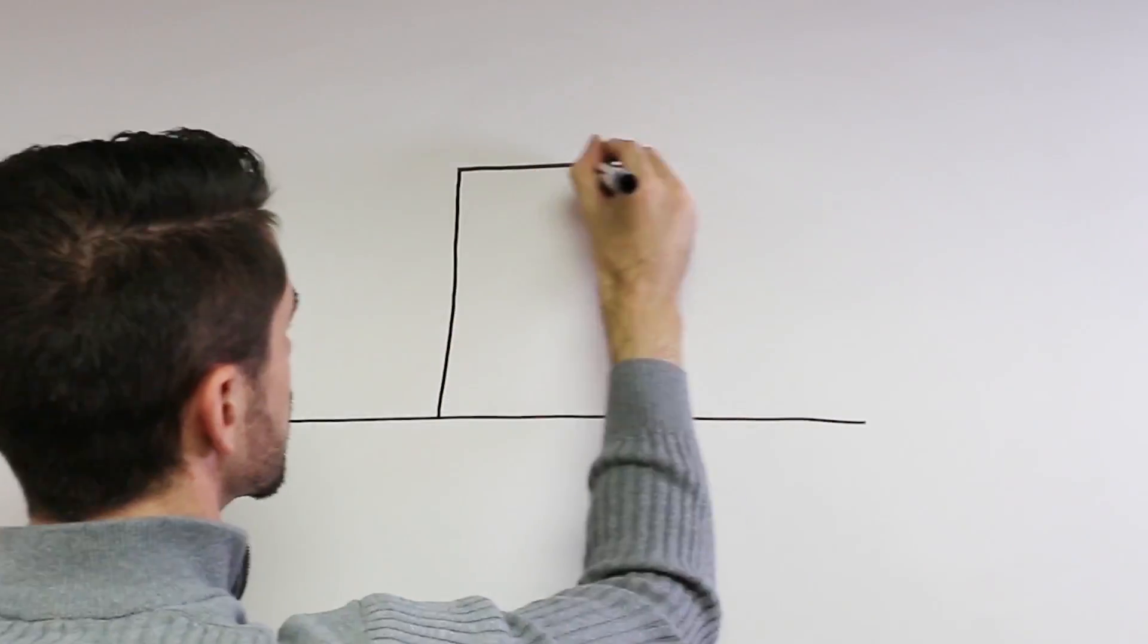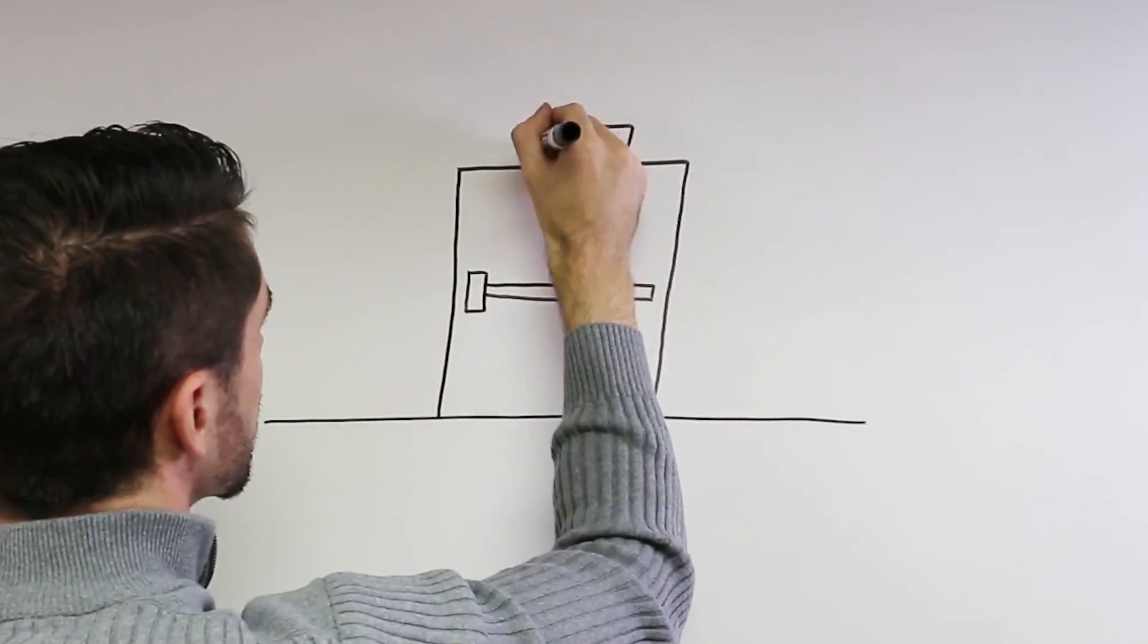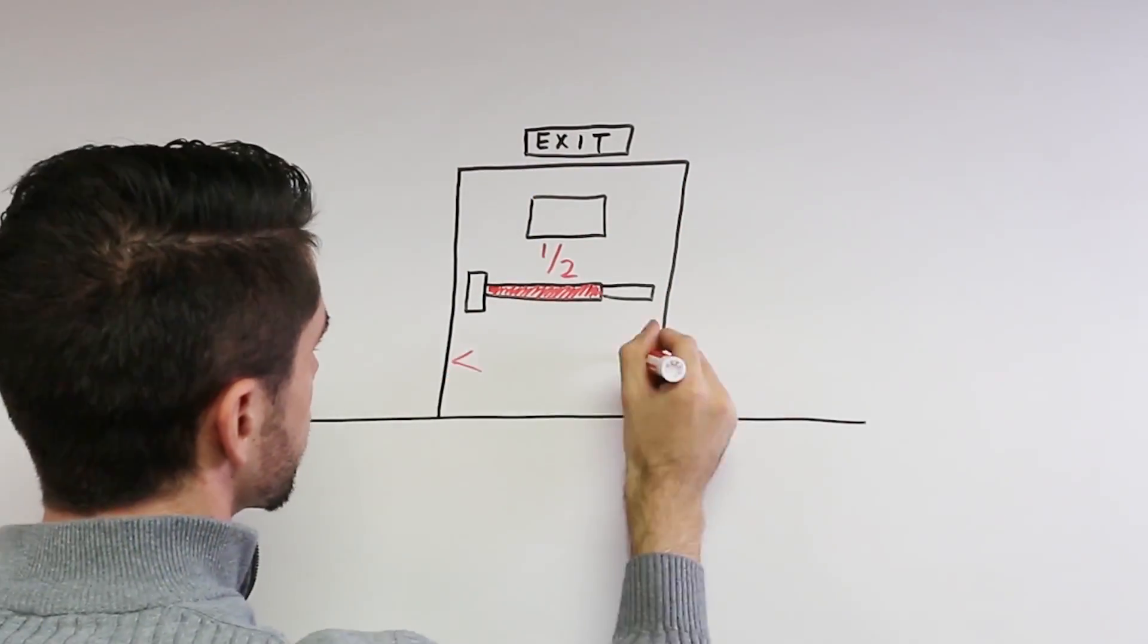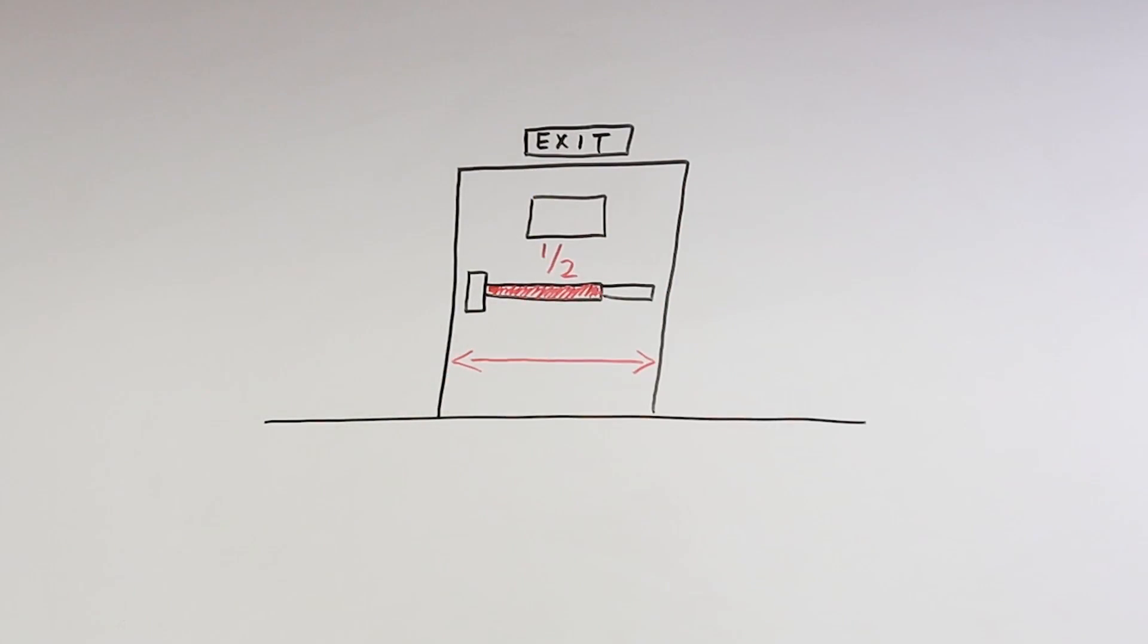When codes require exit hardware, the actuating portion of the device must be at least half the width of the door leaf. That's so when a person or persons are exiting in a hurry, it is easy for them to find the device.